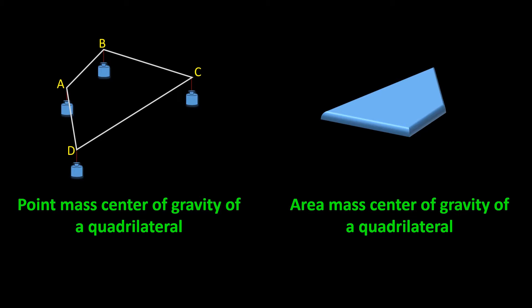If the quadrilateral is symmetrical, like a rectangle or a square, then these two points are one point. If it is not symmetrical, if it is a general quadrilateral, then these two points are two different points. So this is what I'm going to show you, and I'm going to show you how to find the exact position of the center of gravity for both of these scenarios.